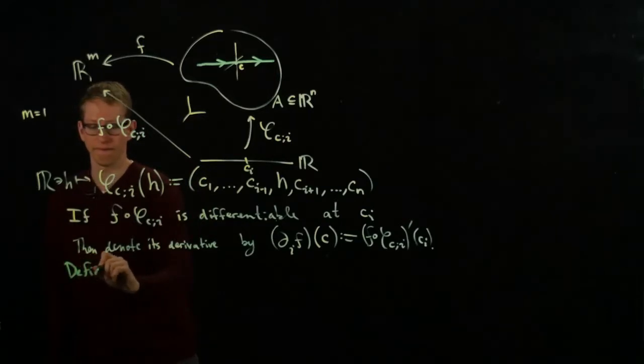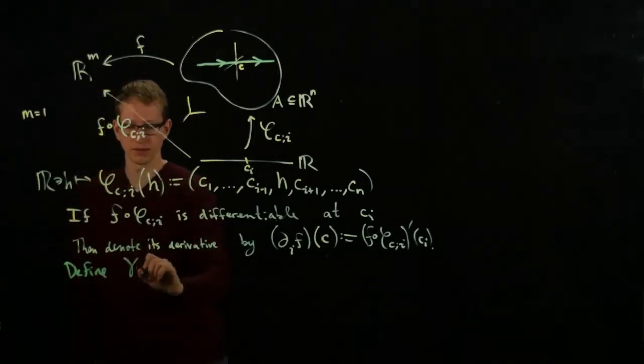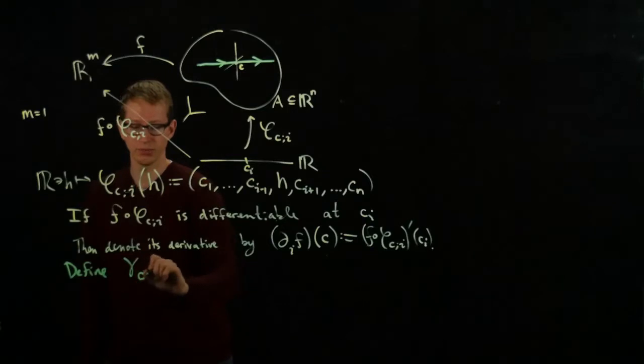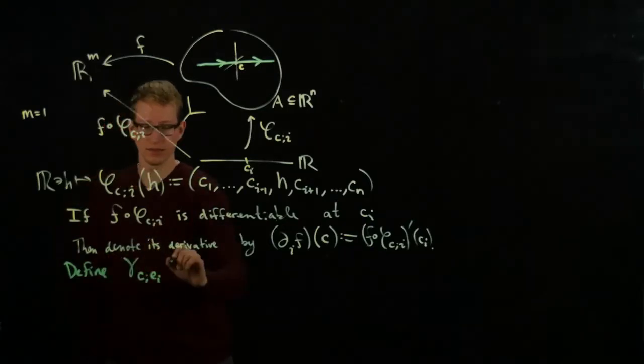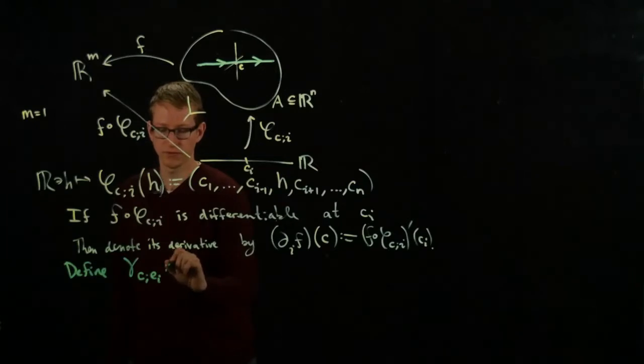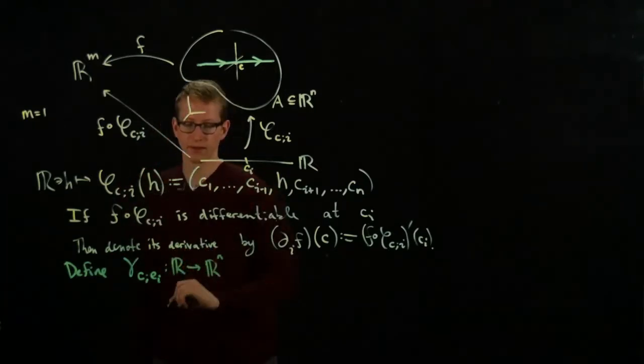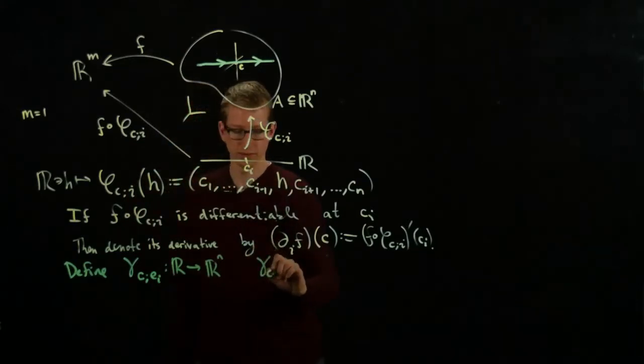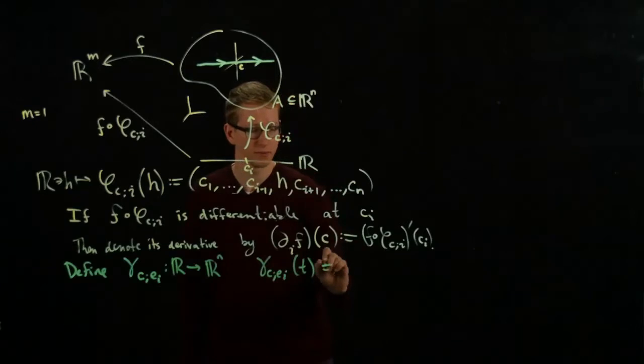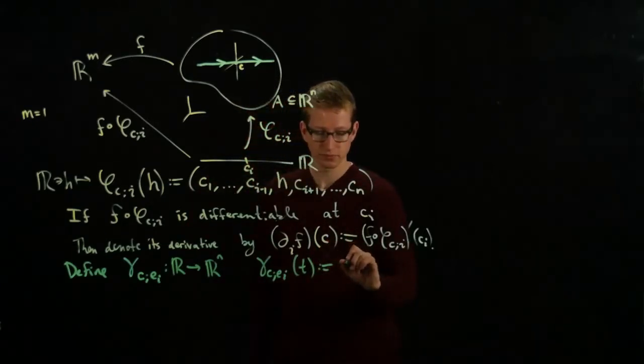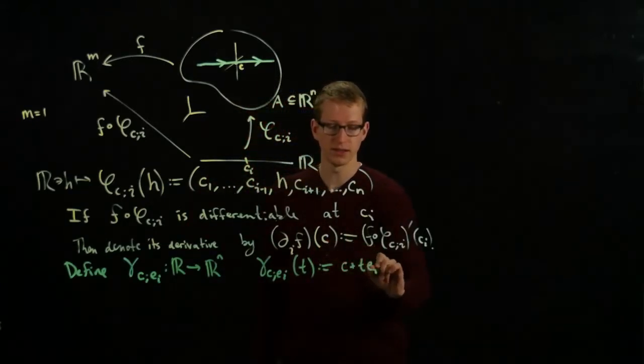We can define γ_C,e_i at the point C in the i-th direction to be the function from R to R^n given by γ_C,e_i evaluated at t is C plus t·e_i.